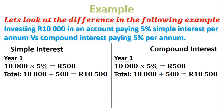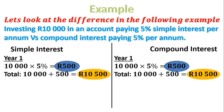There are a few very important things to notice in year one. Firstly, the amount of interest for both is 500 Rand. Secondly, the grand total at the end of year one for both is 10,500 Rand. So in the first year, it doesn't make a difference — whether you're doing simple or compound interest, you get the same amounts. What happens in year two, three, and four is where things change.